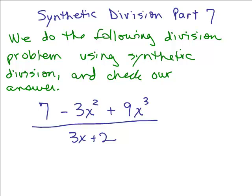This is part 7 of synthetic division and we're going to do the following division problem using synthetic division and then check the answer. We have 7 minus 3x squared plus 9x cubed divided by 3x plus 2. Since we're dividing by a linear factor — just 3x plus 2 — we can use synthetic division.